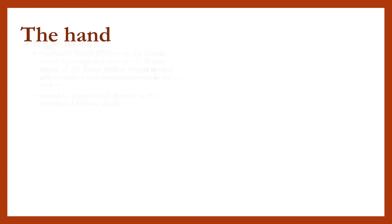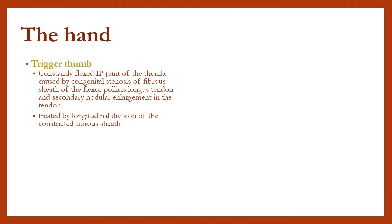The hand: Triggered thumb — a constantly flexed IP joint of the thumb — is treated by longitudinal division of the constricted fibrous sheath.